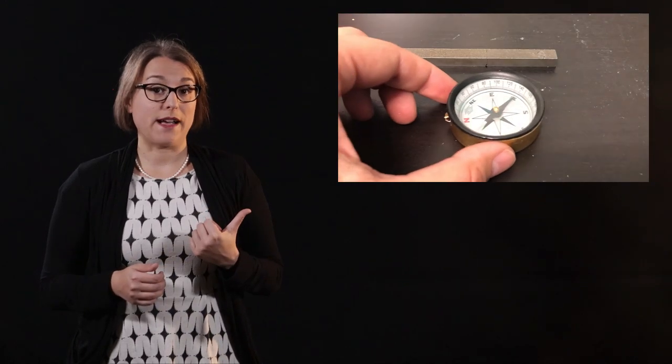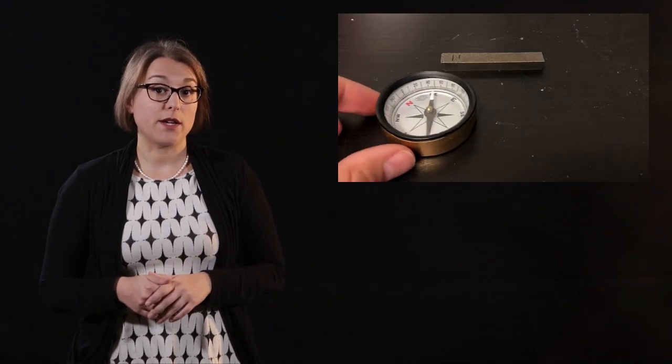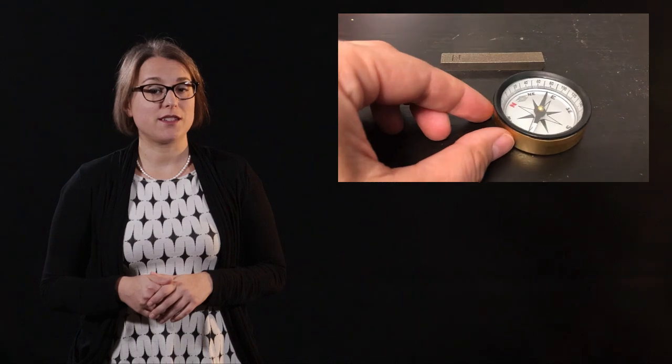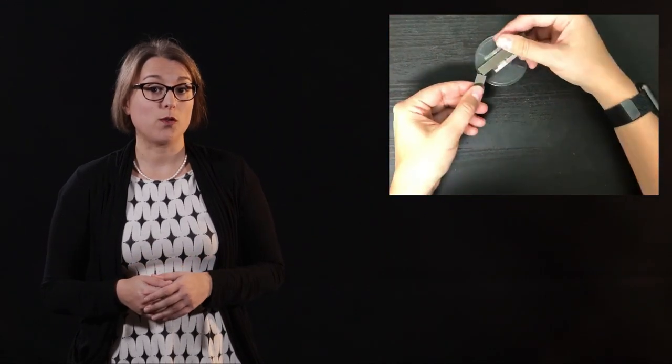This is a bar magnet that contains a north and a south pole. When I break it into two pieces, those two pieces also have their own north and south poles. We can prove that by using a compass to visualize the poles. We can also see that each piece has its own poles by demonstrating the attraction and repulsion that exists between both magnet halves.